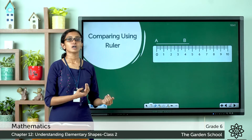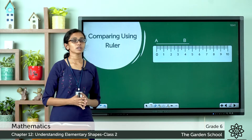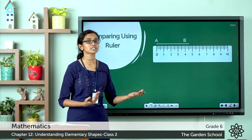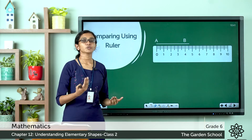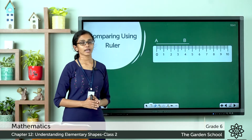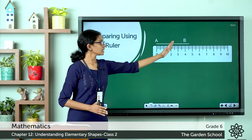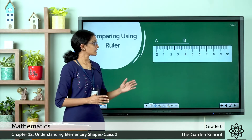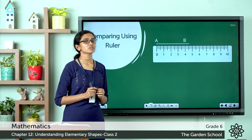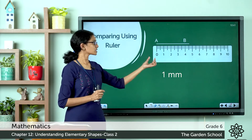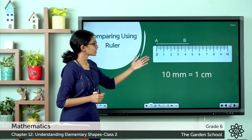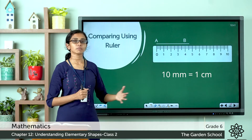We have all learned how to measure a line segment using a ruler. Here you can see line segment AB. To measure its length, place the ruler so that the zero marking coincides with one end point of the line segment, then take the corresponding measurement. There are small divisions on the ruler — each smaller division represents 1 millimeter, so 10 smaller divisions equals 1 centimeter.